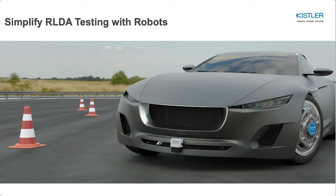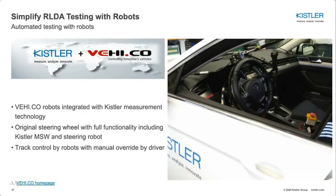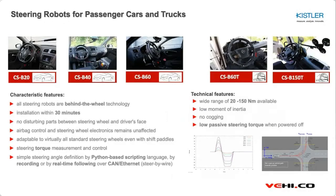Next, we'll move on to simplifying RLDA testing with robots. Within the last two years, we have partnered with a company called VEHICO. They offer steering and pedal robot solutions that we can integrate directly with Kistler measurement solutions and provide local support around the world. For steering robots, there are several options: our CSB 20 is a 20 newton meter version commonly used in ADAS applications. Our CSB 40 and 60 are higher newton meter versions, more commonly used for dynamics or durability applications where you need fast inputs and fast response time. We also have versions for heavy trucks — the 60T and 150T.